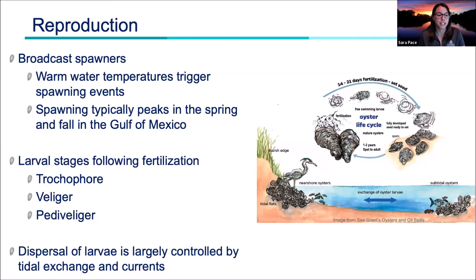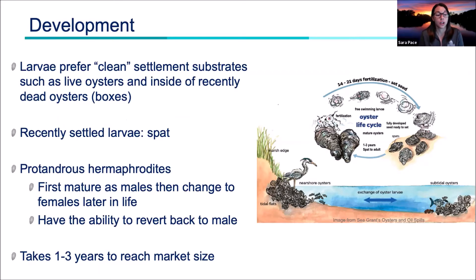Larvae then develop a foot and an eye, becoming pedivelligers, which allow them to search for a suitable settlement substrate. Since larvae spend so much time in the water column, their dispersal is largely controlled by currents and tidal exchange. Larvae prefer clean settlement substrates such as live oysters, and they particularly like to settle on the inside of recently dead oysters — called boxes — which provide a protected area. Once a pedivelliger cements itself, those baby oysters are called spat. Oysters are protandrous hermaphrodites, first maturing as males then changing to females, though they can revert to male. Oysters grow rapidly, reaching market size of three inches in one to three years depending on location.